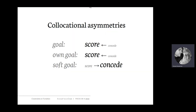To sum up our observations: when you have a regular goal, it's scored more often than it's conceded. The same goes for own goals — scored more often than conceded. Soft goals are the other way around. Why are these asymmetries so similar in different languages — English, Spanish, Portuguese, Czech, Polish, German? Why do we have the same orientations and dominant patterns in such diverse languages? We can explain these asymmetries by looking at what I like to think of as perceptual dynamics.